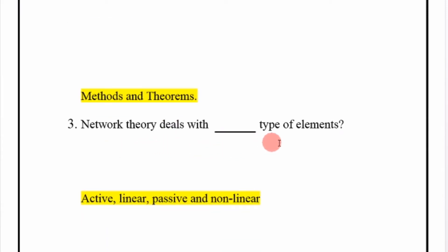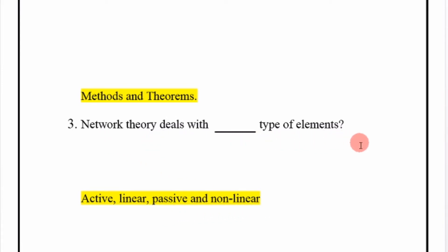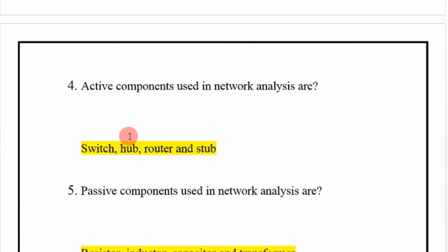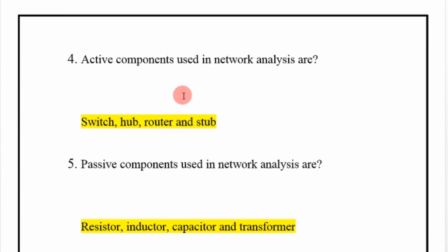Network theory deals with active, linear, passive, and nonlinear types of elements. Active components used in network analysis are switch, hub, router, and stub.